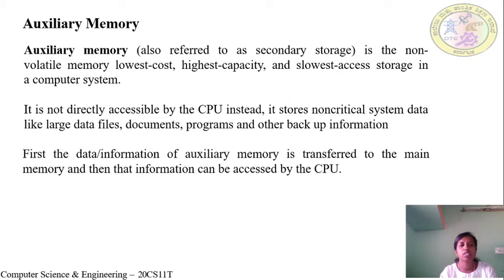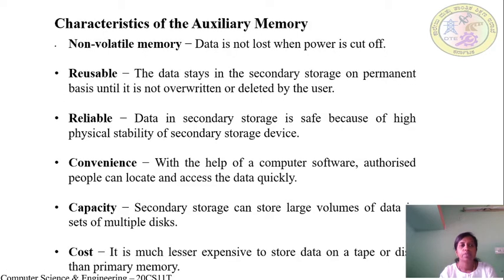Whatever data is stored in auxiliary memory is transferred to main memory, and then the information can be accessed by the CPU. The first characteristic of auxiliary memory is that it is non-volatile — data is not lost when the power is switched off. Unlike main memory, where data is erased when power is switched off, that does not happen here.